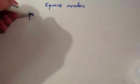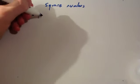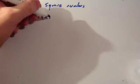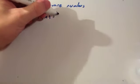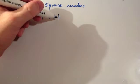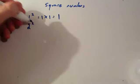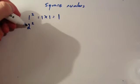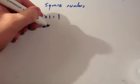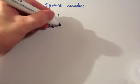So, if you wanted to do 1 squared, you have to multiply the 1 by itself. So, you do 1 times 1. 1 times 1 is 1. So, 1 squared is 1. If you wanted to square 2, you'd multiply the 2 by itself. So, you do 2 times 2, which equals 4.